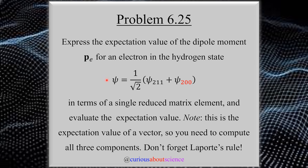The mixed state psi is composed of ψ(2,1,1) and ψ(2,0,0). This is important because there was a typo in the book — the errata corrects it. With the corrected state, what we want to do is express the expectation value in terms of a single reduced matrix element and evaluate it. Note this is the expectation value of a vector, so you need to compute all three components. Don't forget Laporte's rule.